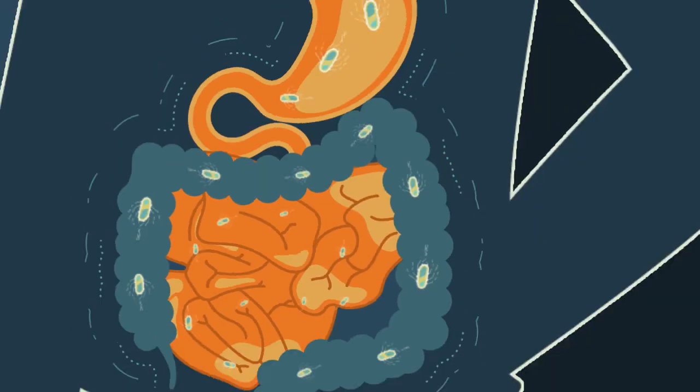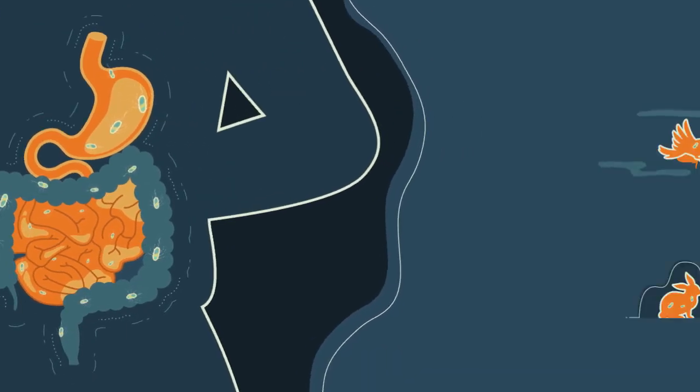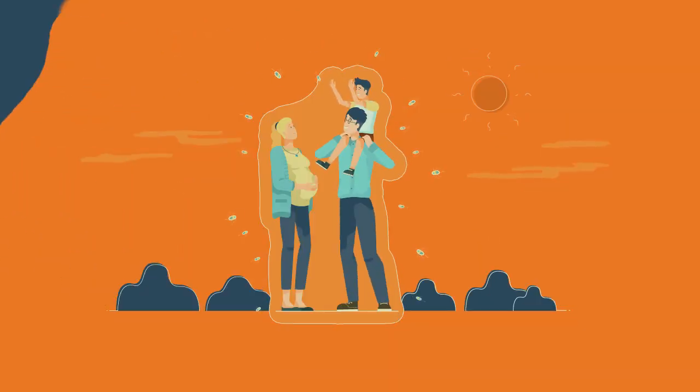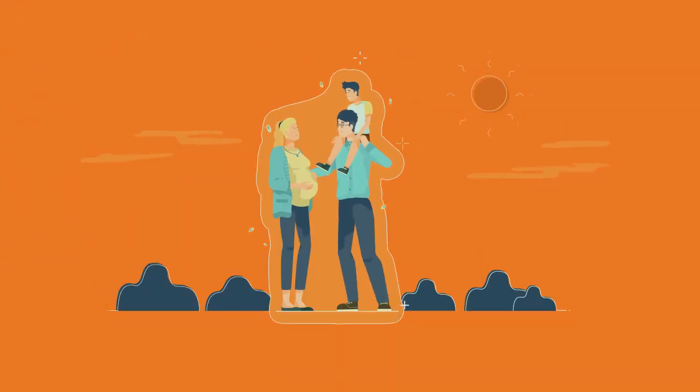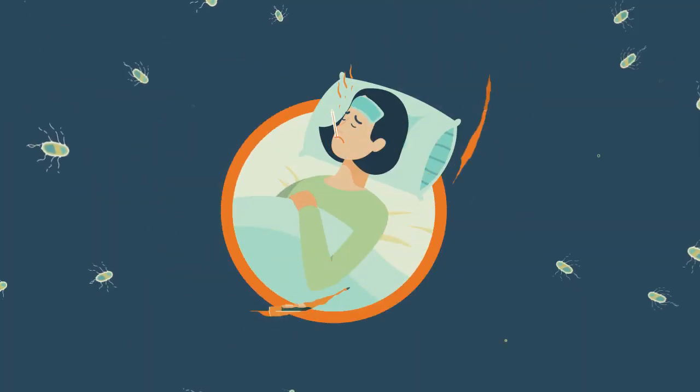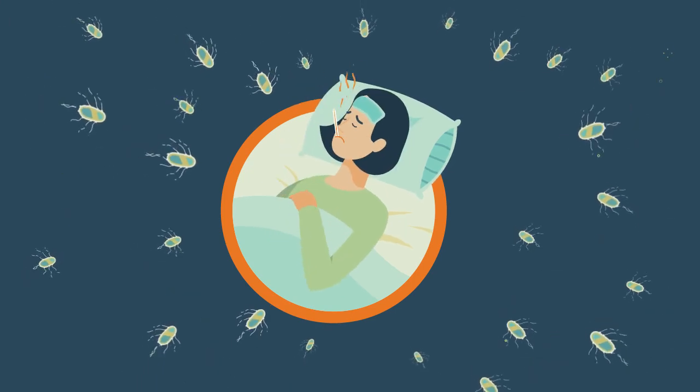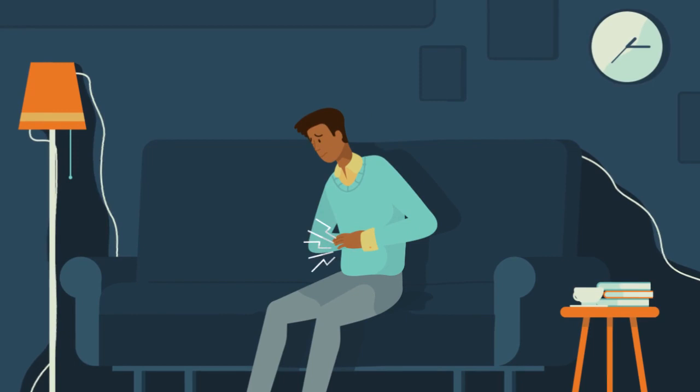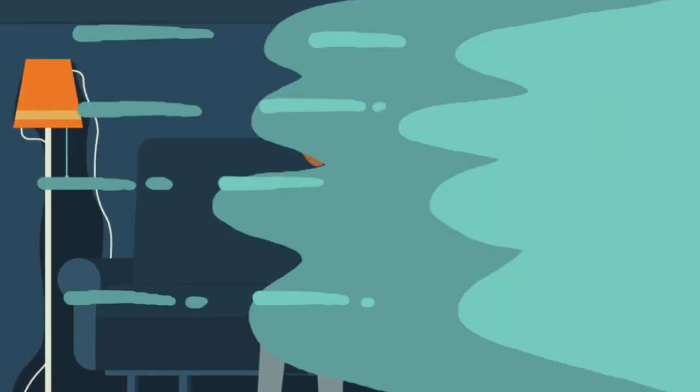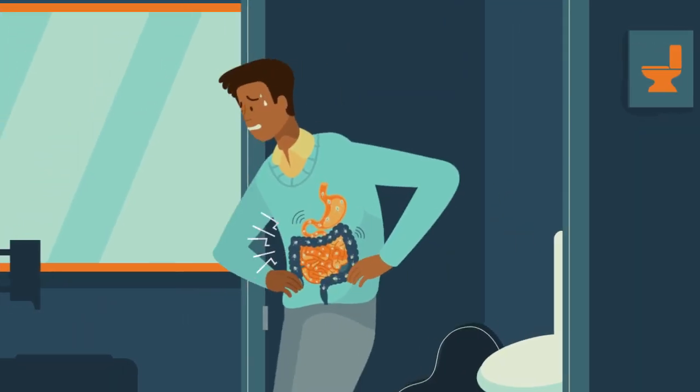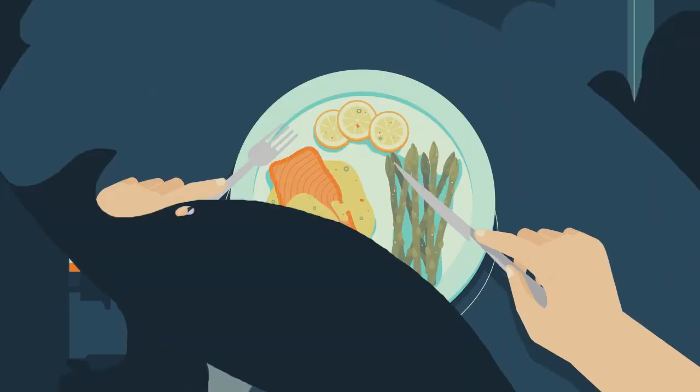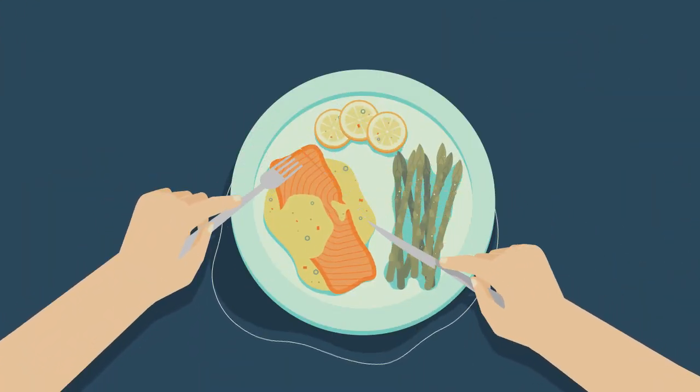E. coli bacteria inhabit the intestinal tract of humans and warm-blooded animals. Most strains of E. coli do not cause disease in humans, but toxic serotypes like O157H7 can cause illness and death. Symptoms such as abdominal pain and severe cramps, followed within 24 hours by diarrhea, often bloody, begin three to four days after ingestion.